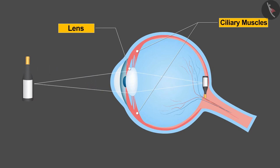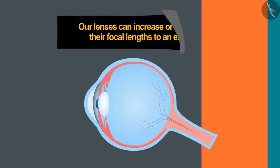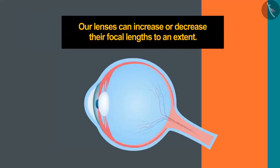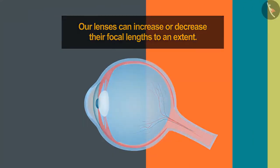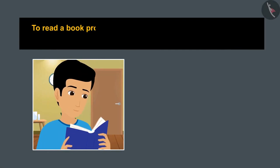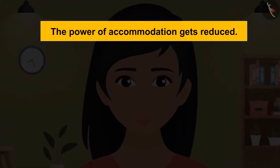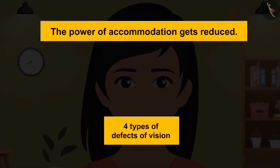You must have noticed that you can't read while keeping a book very close to your eyes. Why is it so? Because our lenses can increase or decrease their focal lengths to an extent. For a normal eye, this distance is 25 centimeter, which is called near point. To read a book properly we need to put it at least 25 centimeter away. Similarly, the far point is at infinity. One reason for the eyes to become weak is that the power of accommodation gets reduced. There are broadly four types of defects of vision.